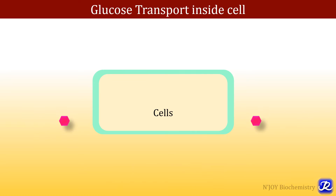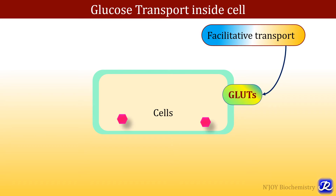How does glucose enter inside the cell? It is a large molecule and it cannot enter inside the cell by simple diffusion. So it has to be transported by some mediators. It is transported inside the cell by two different mechanisms: one of them is facilitative transport, which occurs with the transporters called GLUT, that is glucose transporters.